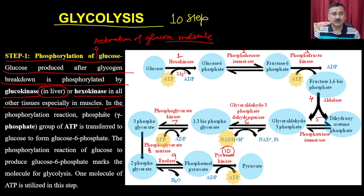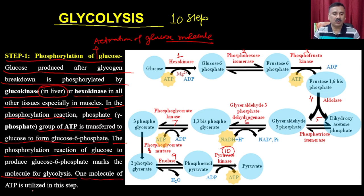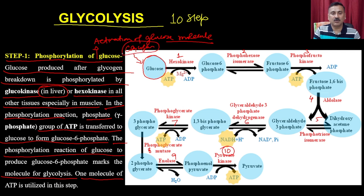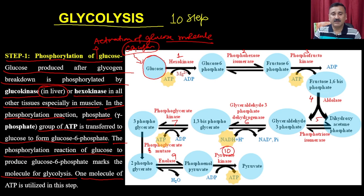In the phosphorylation reaction, the gamma phosphate group of ATP is transferred to glucose to form glucose-6-phosphate. The phosphorylation of glucose to produce glucose-6-phosphate marks the molecule for glycolysis. In this process, one molecule of ATP is utilized. This glucose is produced from the breakdown of stored glycogen. Once energy is required, glycogen is broken down to form glucose, which can participate in different types of reactions.